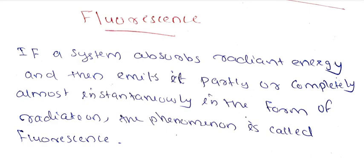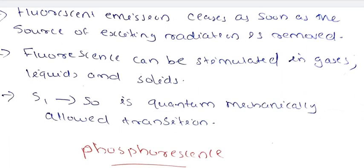In these days, we have dresses with fluorescent materials. If there is a light, we absorb the light and emit it. Fluorescence emission ceases as soon as the source of exciting radiation is removed. Fluorescence can be stimulated in gases, liquids, and solids. The transition S1 to S0 is the allowed transition.